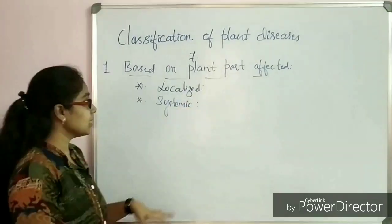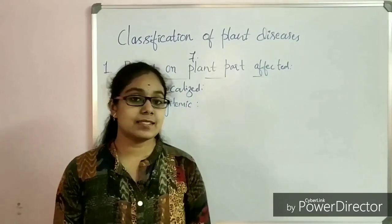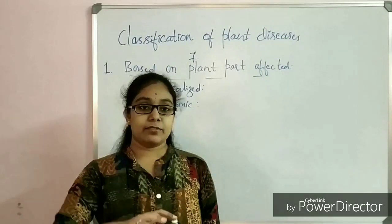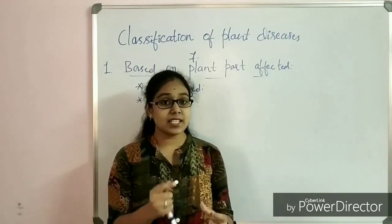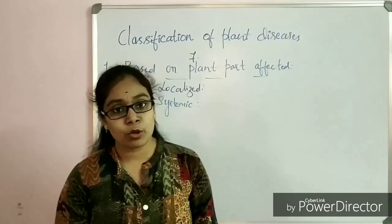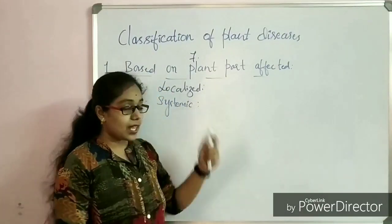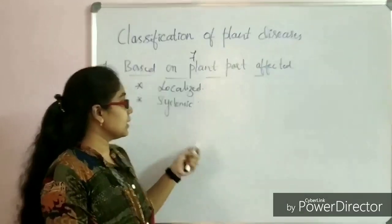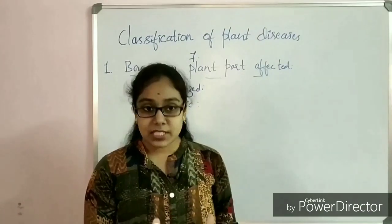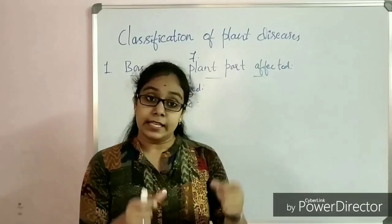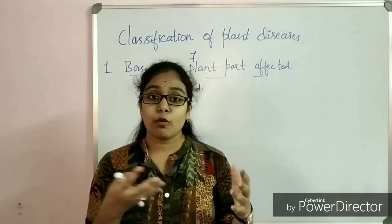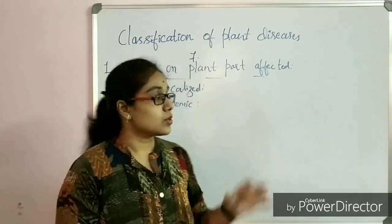Localized plant diseases are diseases that have attacked a certain part or a certain specific organ of the plant body. Systemic plant diseases, on the other hand, are diseases which attack the entire plant body. Systemic plant diseases have been further classified into root disease, fruit disease, foliage disease, and stem disease.